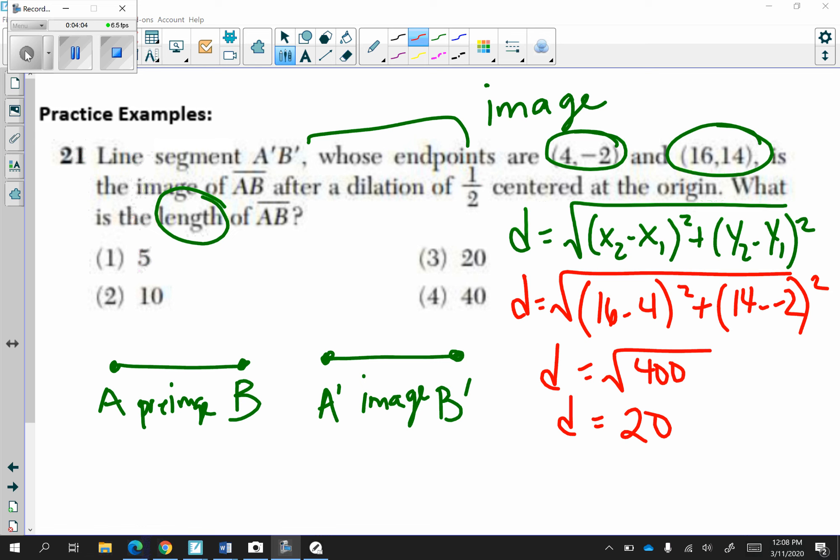After using the distance formula, we found the distance of the image, a prime, b prime, to be 20. Now, it says that the image of AB is after a dilation of one-half. So this has been one-halved to get 20. So we want to know the pre-image. So what we have to do is take 20 and multiply it by 2 to get 40. So the pre-image is 40.